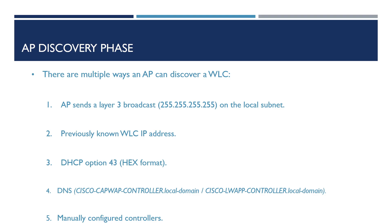The next method is to use known locally stored controller IP addresses within the AP. The AP will remember up to eight previously used wireless LAN controllers and will try and communicate with them to see if they're still active. Thirdly, the AP can discover wireless controllers using a DHCP option. The DHCP option used for Cisco access points is option 43, specified in hex format. The IP address of this option should be the management IP address of the wireless controller you want the AP to join.